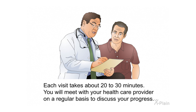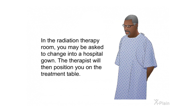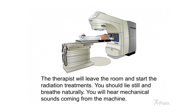Each visit takes about 20 to 30 minutes. You will meet with your health care provider on a regular basis to discuss your progress. In the radiation therapy room, you may be asked to change into a hospital gown. The therapist will then position you on the treatment table, then leave the room and start the radiation treatments. You should lie still and breathe naturally. You will hear mechanical sounds coming from the machine.